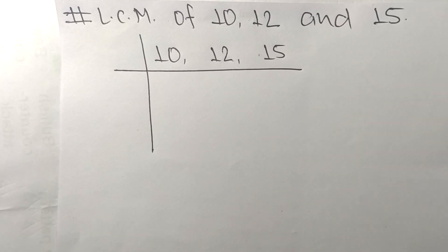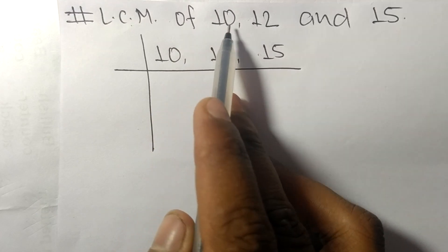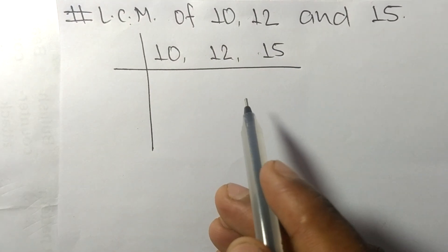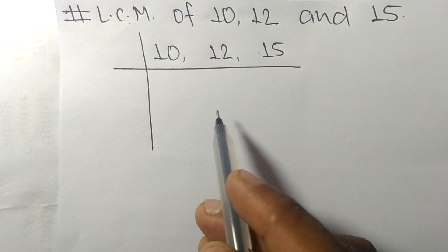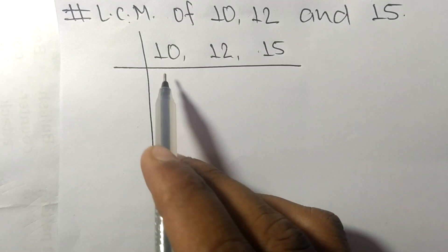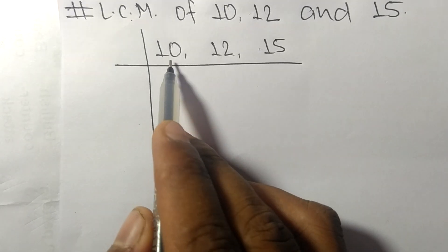Today in this video we shall learn to find the LCM of 10, 12, and 15. To find LCM, we have to choose the lowest number that can exactly divide at least any two of these numbers.